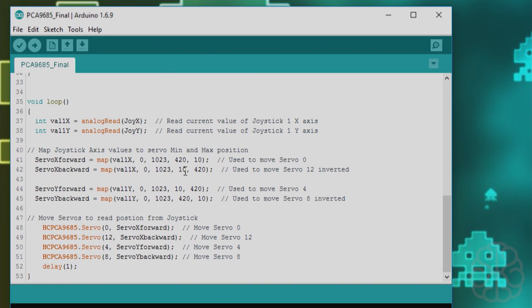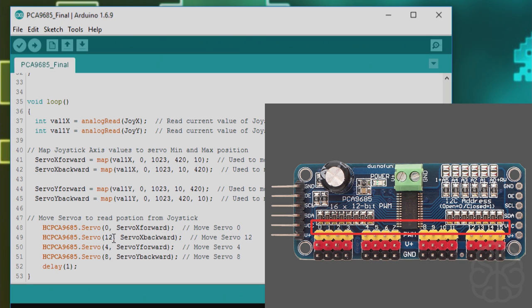Backwards, 0 to 1023 will be 10 to 420, so that way they move and you'll see when we do the testing how that affects the movement of the servos. Servo y forward and backwards, same thing here, we're just mapping different values. Then we just move the servos to their position depending on how I move the joystick.